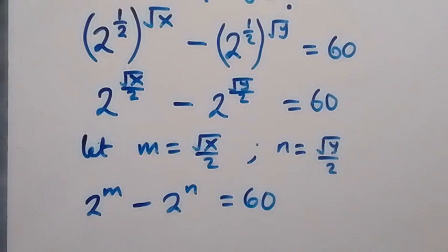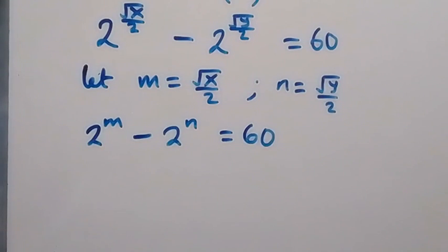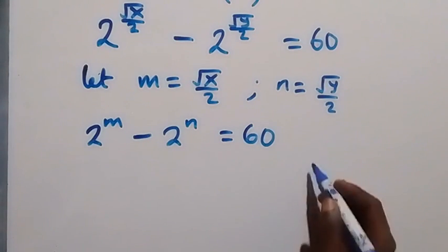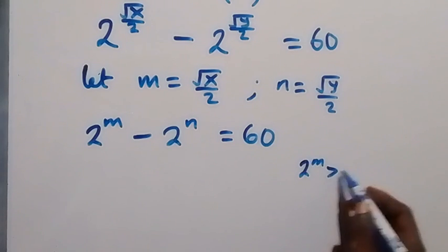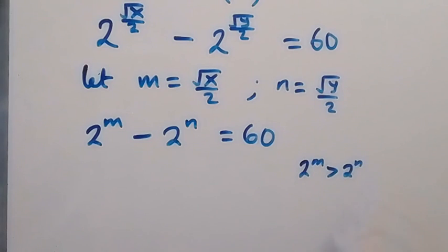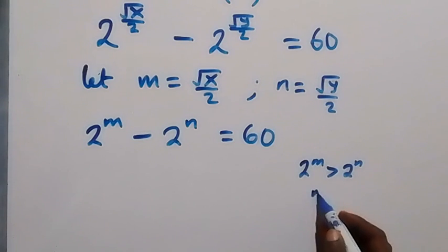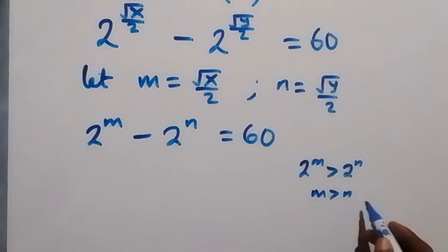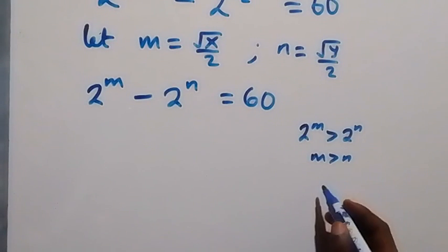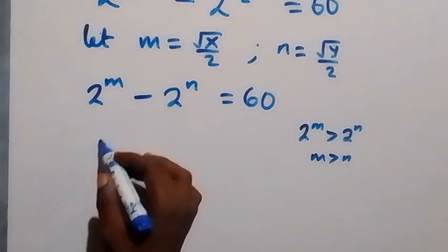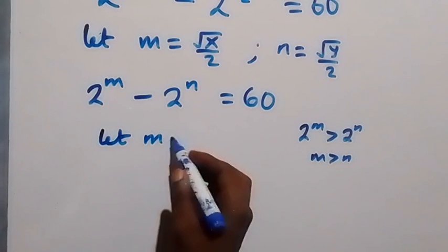For this to be a positive number, it implies that 2 raised to power m is greater than 2 raised to power n, which implies that m is also greater than n.